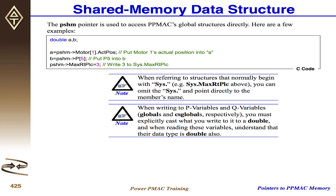Here's an example of getting at motor1.actPause. It's just PSHM, structure dereference operator, and then you write the structure name. You can also get to P variables directly, and there are ways to get to Q variables. If you want to get at a structure that starts with sys.data, like sys.maxRTPLC, you omit the 'sys.' — so here it's just PSHM pointing to maxRTPLC.